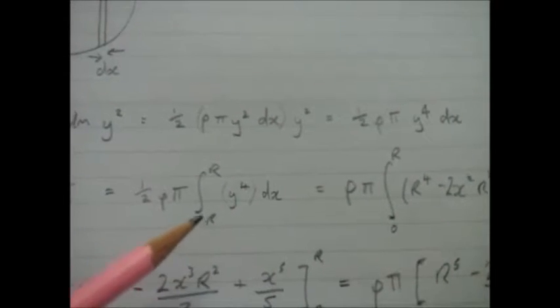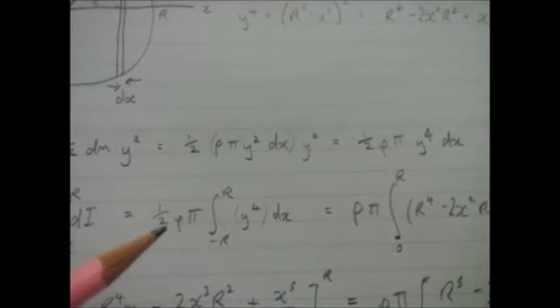So what I've done there, I've changed the limits from -R to R to zero to R, and because I need to double the result, I just multiplied the whole thing by 2, which got rid of that fraction there. The half disappears, so the whole thing becomes ρπ outside the integral with limits from zero to R.